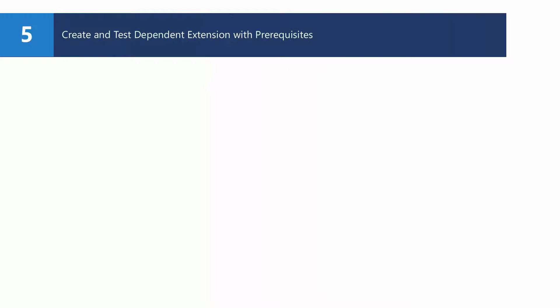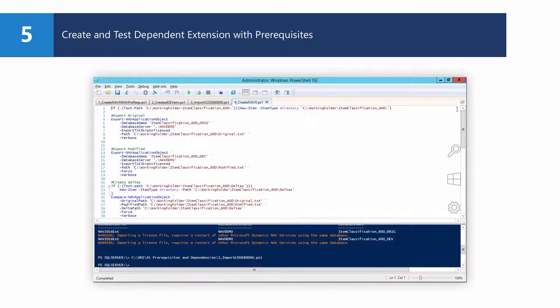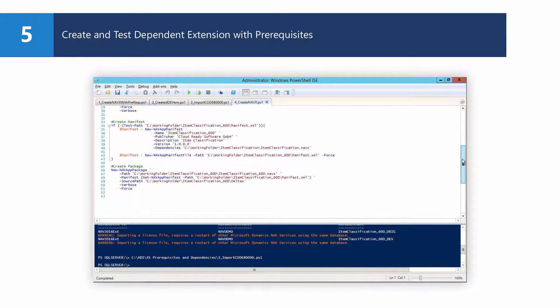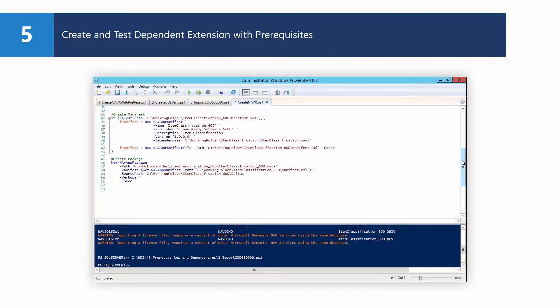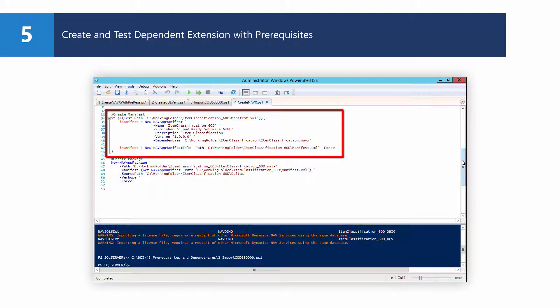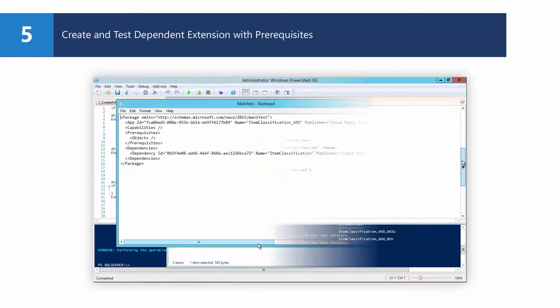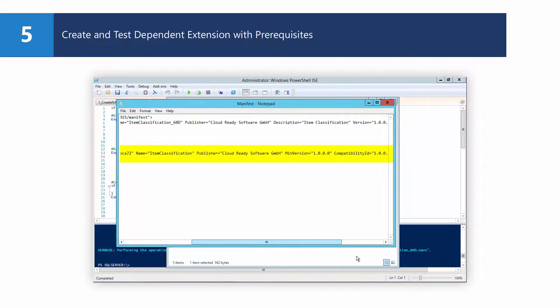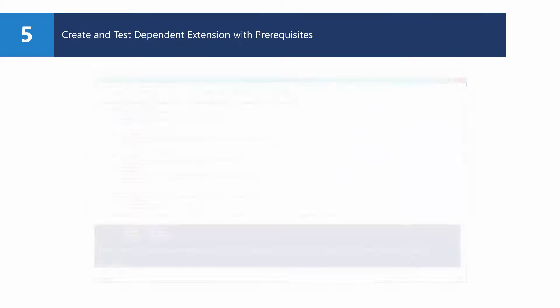Now that development of the new extension is ready, let's create a navx file and test it in the test environment. I'll use the same script and method explained in the 'How do I build a basic Microsoft Dynamics NAV extension' video. Notice that in the script, when creating the manifest, we reference the navx file from which this extension is dependent. When you open the manifest, you will see that the dependency is described.